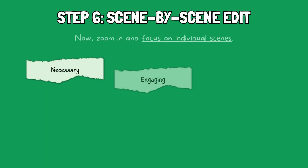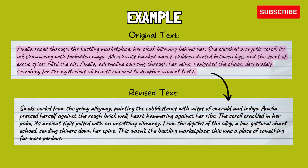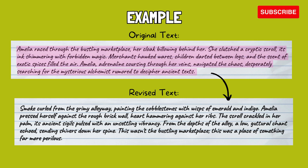Step 6: Scene-by-scene edit. Now zoom in and focus on individual scenes. Are they necessary? Do they move the story forward? Are they emotionally engaging? Rewrite or cut scenes that don't work. The original scene feels generic and disjointed. While it establishes the character's urgency in the setting, it lacks focus and doesn't reveal anything new about her mission or the significance of the scroll. It's more atmospheric than plot-driven and might not captivate readers.